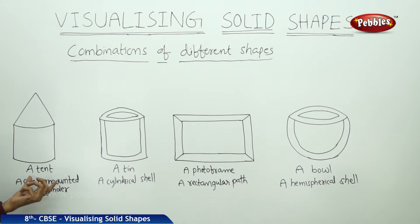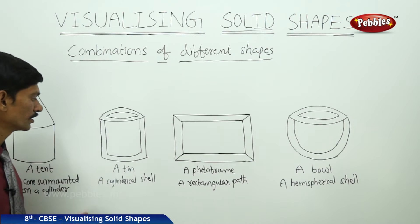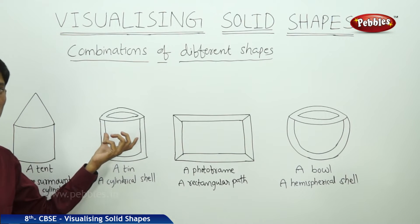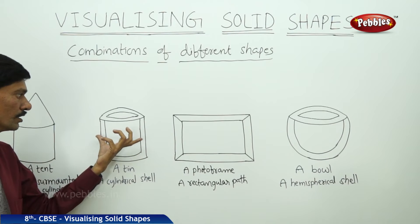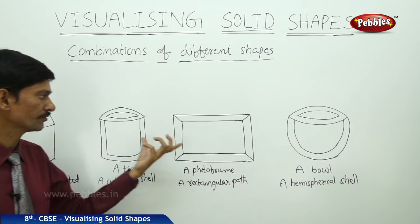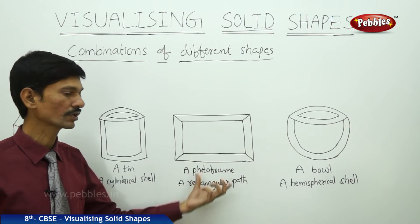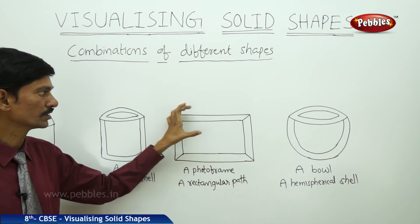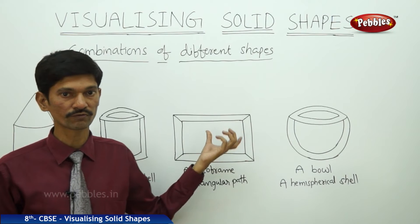In the second figure, a tin, this is a cylindrical shell — a combination of two different cylinders: one is the inner cylinder and the other is the outer cylinder. The third figure is a photo frame, which is a rectangular path with two rectangles: one outer rectangle and one inner rectangle. So this is also a combination of two different shapes.